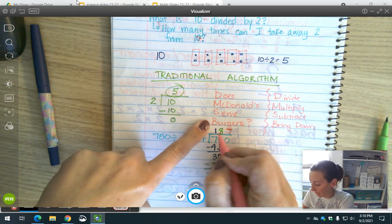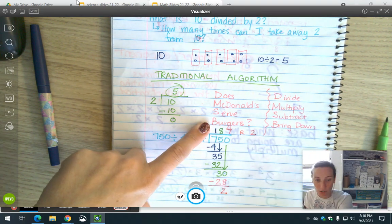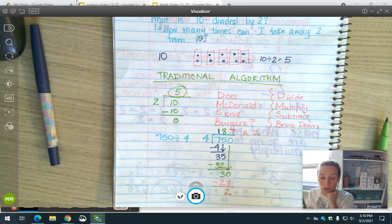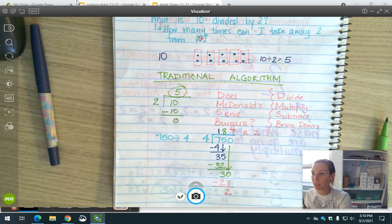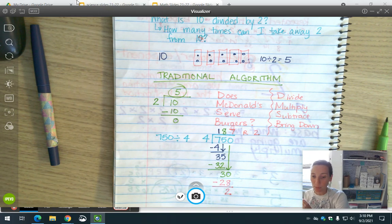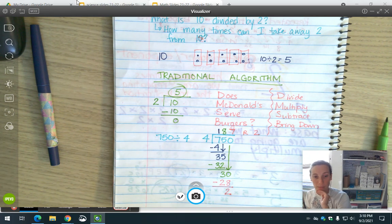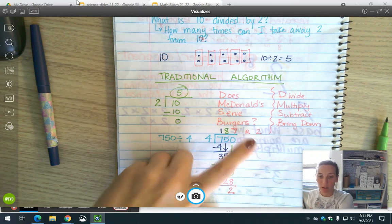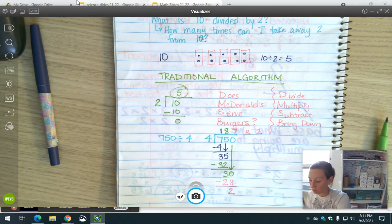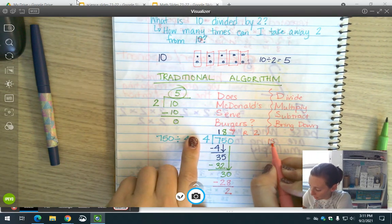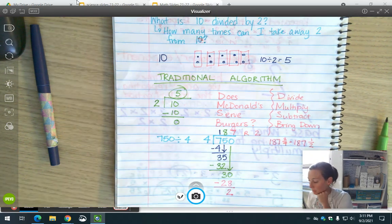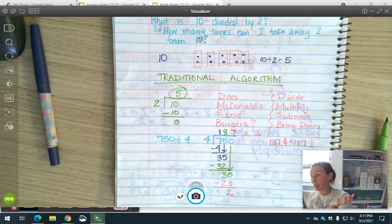At this point I would say I have 187 with a remainder of 2. Depending on what kind of problem or what unit that was, I might do a couple different things. If it was a word problem and it said I have 750 pieces of candy and I can put 4 pieces of candy in each bag, how many bags can I make? Well then I would just say 187 because the remaining 2 I can't make another bag with it. I might make it into a fraction where I put the remainder over the denominator, so I might say 187 and 2 fourths, which is equivalent to 187 and 1 half.